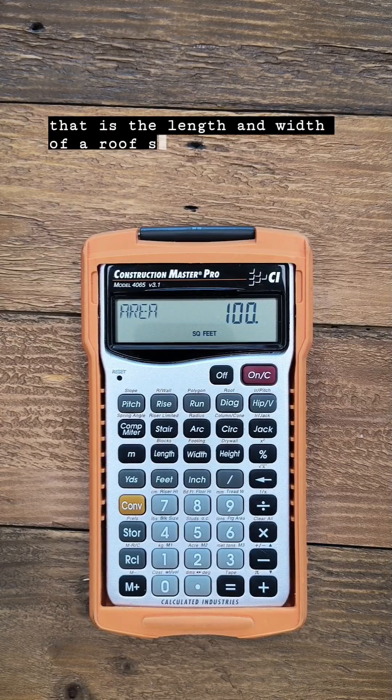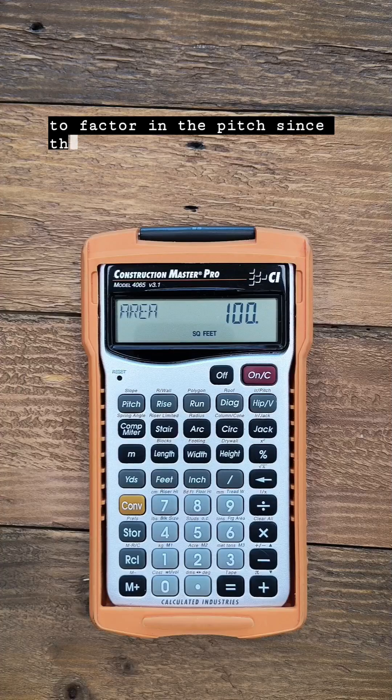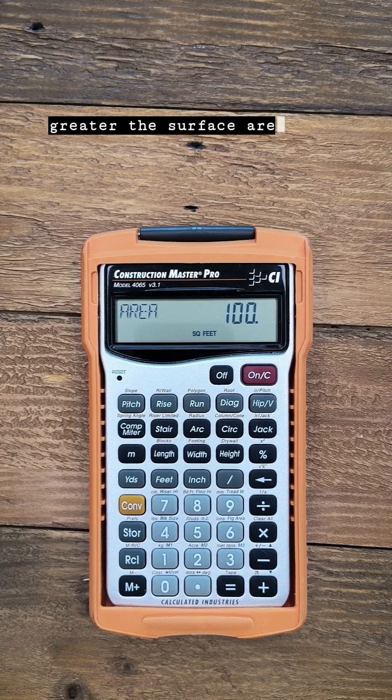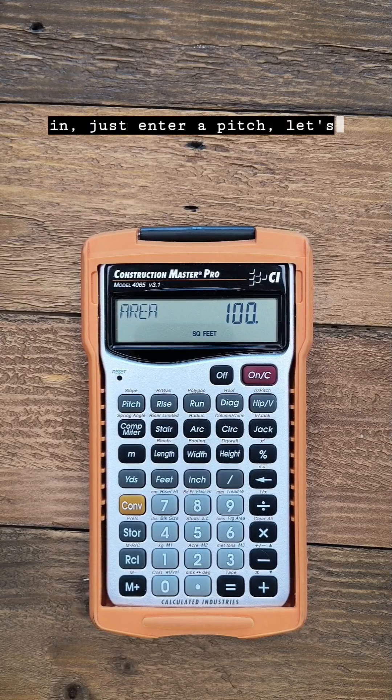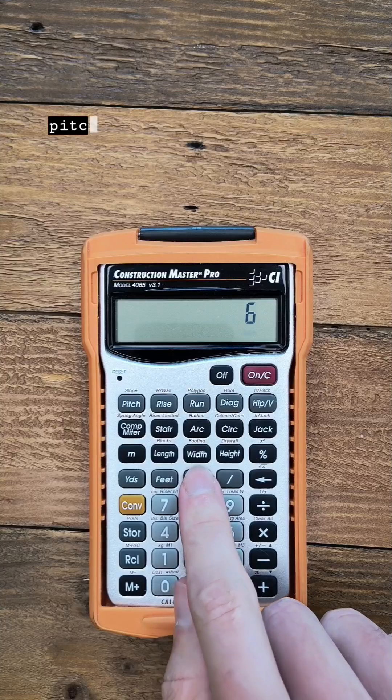But if that is the length and width of a roof section, you need to factor in the pitch. Since the greater the pitch, the greater the surface area of the roof, just enter a pitch—let's say 6 inches—and push pitch.